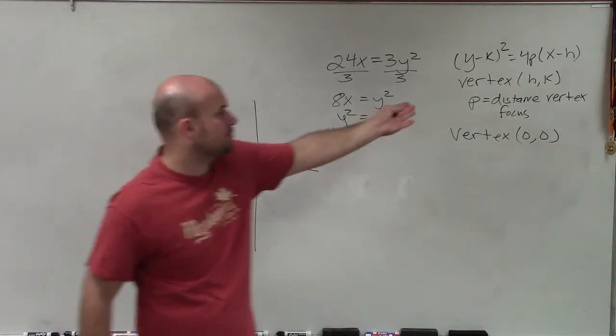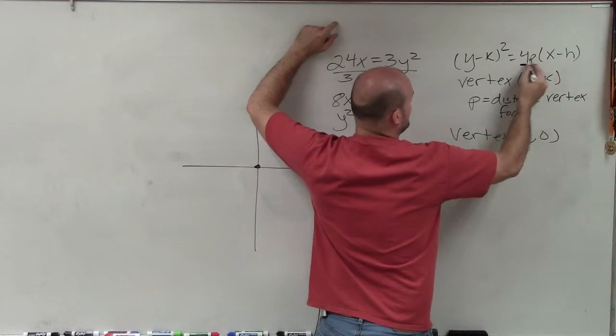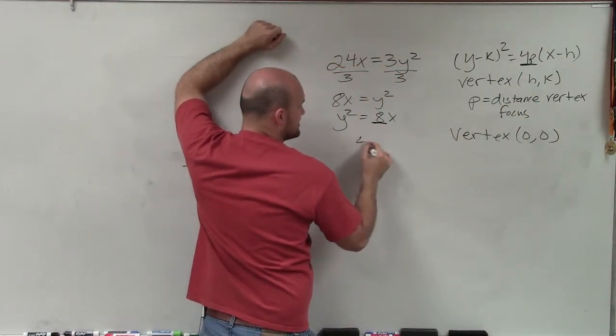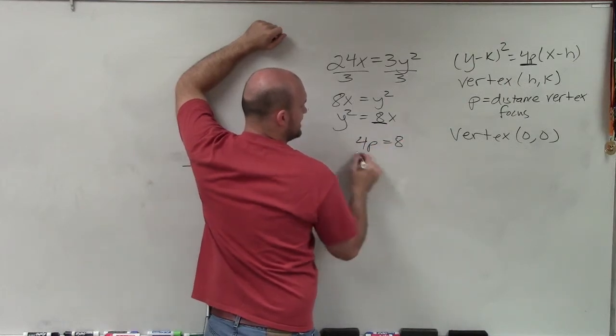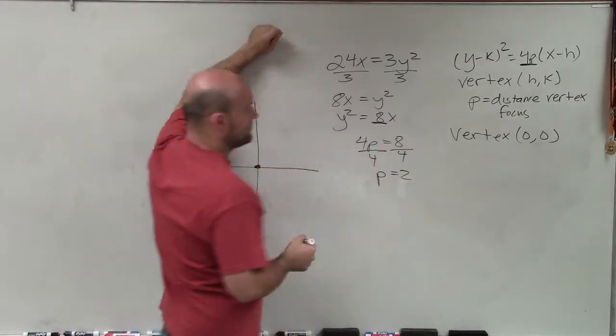The next thing is I need to determine what p is. Notice that 4p is being multiplied by x. Here, I have 8 that's being multiplied by x. So I can say that 4p = 8. Divide by 4, and p = 2.